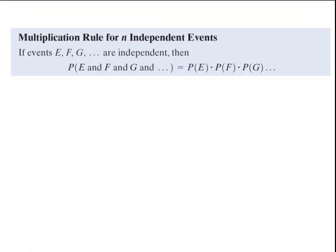Now the multiplication rule for more than two events is expressed here. As long as every event is independent, if we want to find all these events happening at the same time, we simply multiply their probabilities.